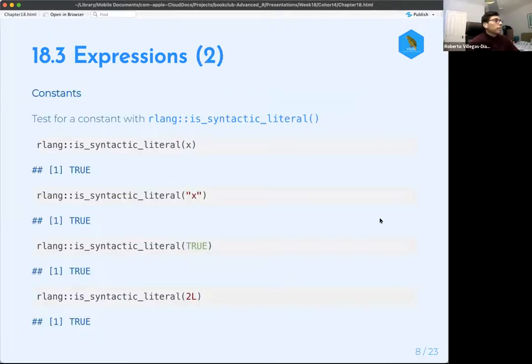So constants. Well, a constant is basically it can be a null or an element of length one. So you can have a verbal, then you can have a string, you can have a boolean, you can have an integer. And with rlang is syntactic literal, then you can test if it's a boolean, if that's a constant or syntactic literal.